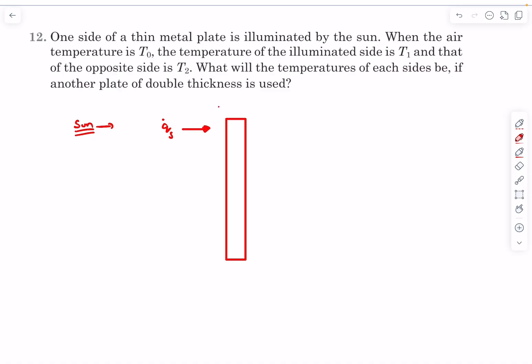This exposed side to the sun has a temperature of T1 and the other side has a temperature of T2. The question is what will the temperatures of each side be if we use a plate whose thickness is double this one.